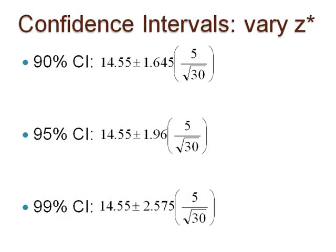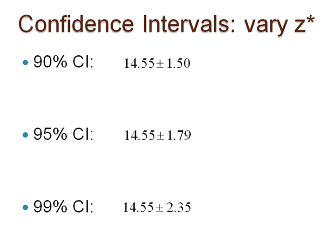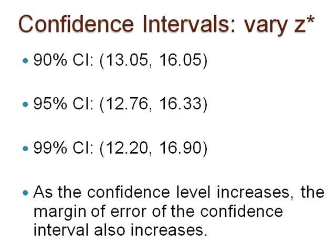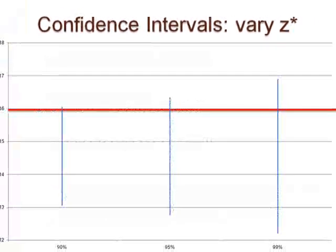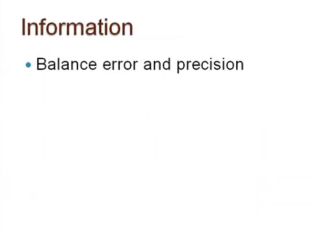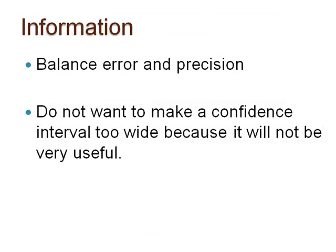Here are the results. Notice that as the confidence level increases, the margin of error and the width of the confidence interval also increase. Here is an image of those three confidence intervals. This increase should make sense because we are more confident in a wider interval capturing the population mean. However, we need to balance error and precision. We do not want to make our interval too wide because a confidence interval that is too wide is not very useful.